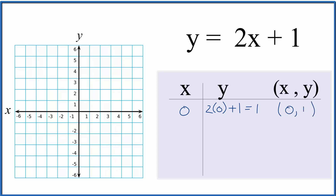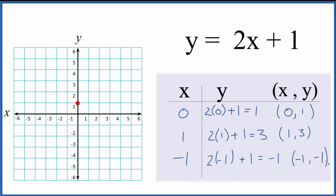I'll come over to my graph — here's the x-axis. I'm going to go x is 0, and then on the y-axis I'm going to go to 1. So we have our first point. Now we can put some other numbers in. I'm going to put in a 1 and a negative 1. So now I can plot these points. I've done (0,1). Now I go on the x-axis to 1, and I'm going to go to 3 on the y-axis right here.